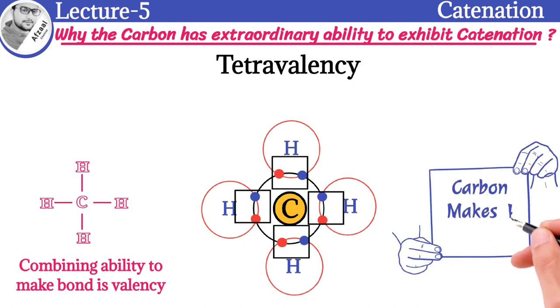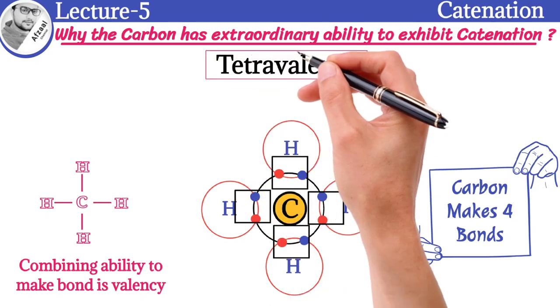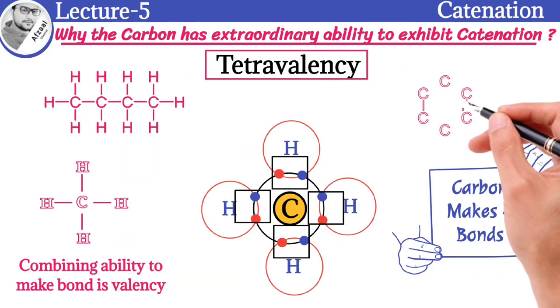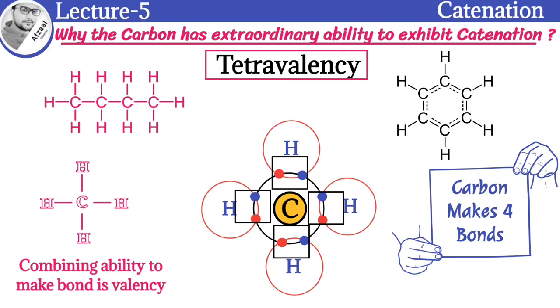Carbon atoms can make four bonds. That's why carbon is a tetravalent element. This property enables carbon atoms to make bonds with each other to form chains and rings.